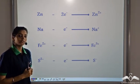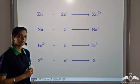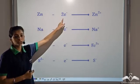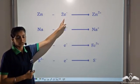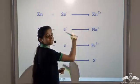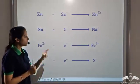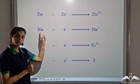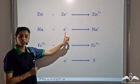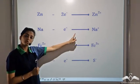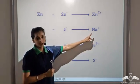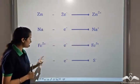Let's look at these reactions. When a zinc atom loses two electrons, it becomes positively charged — it becomes Zn2+. When we have a neutral sodium atom, it loses one electron and becomes a sodium ion, so we get Na+.